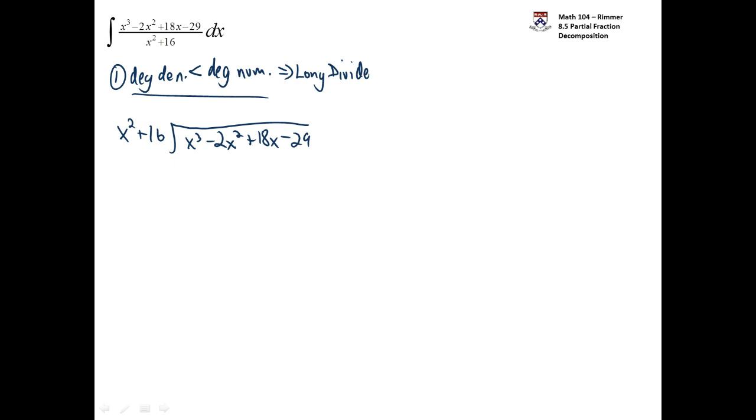How does it work? Well, it's helpful if you have missing terms represented. So I'm going to rewrite this as x squared plus 0x plus 16. Not necessary, but it's helpful. And then divide it into the same thing, x cubed minus 2x squared plus 18x minus 29.